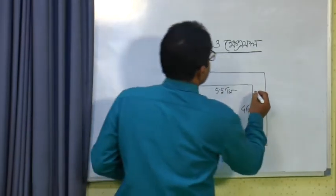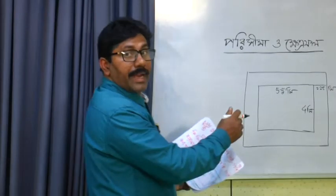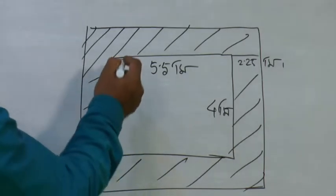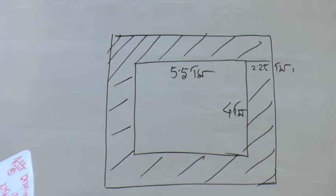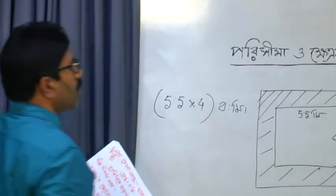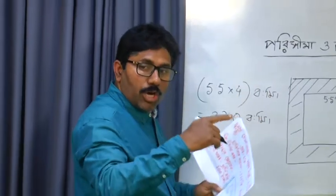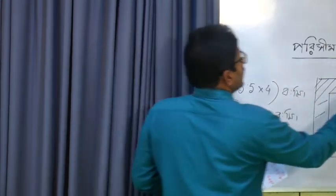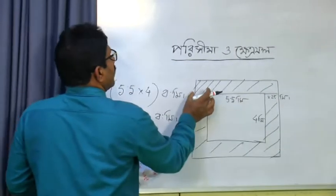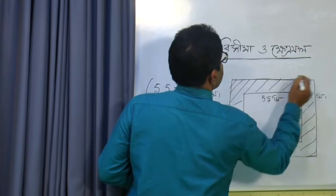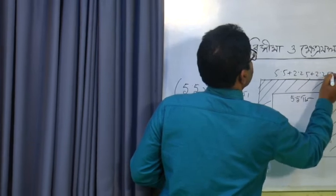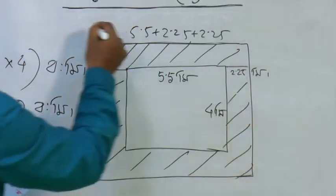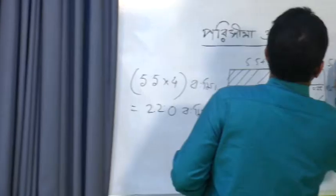The road is 4 meters. The road is 22 meters. The road is 4 meters, then 5.5 meters and 5 meters. The road is 5.5 meters.